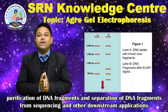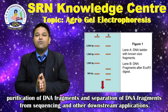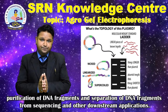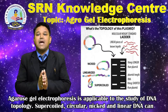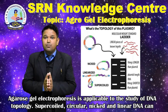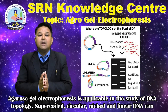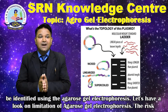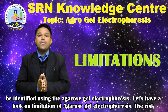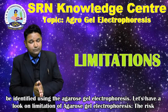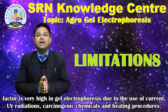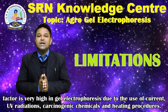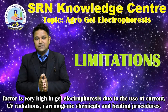Additionally, it allows purification of DNA fragments and separation of DNA fragments for sequencing and other downstream applications. Agarose gel electrophoresis is also applicable to the study of DNA topology — supercoiled, circular, nicked, and linear DNA can be identified using agarose gel electrophoresis. Let's have a look at the limitations: the risk factor is very high in gel electrophoresis due to the use of electric current, ultraviolet radiation, carcinogenic chemicals, and heating procedures.